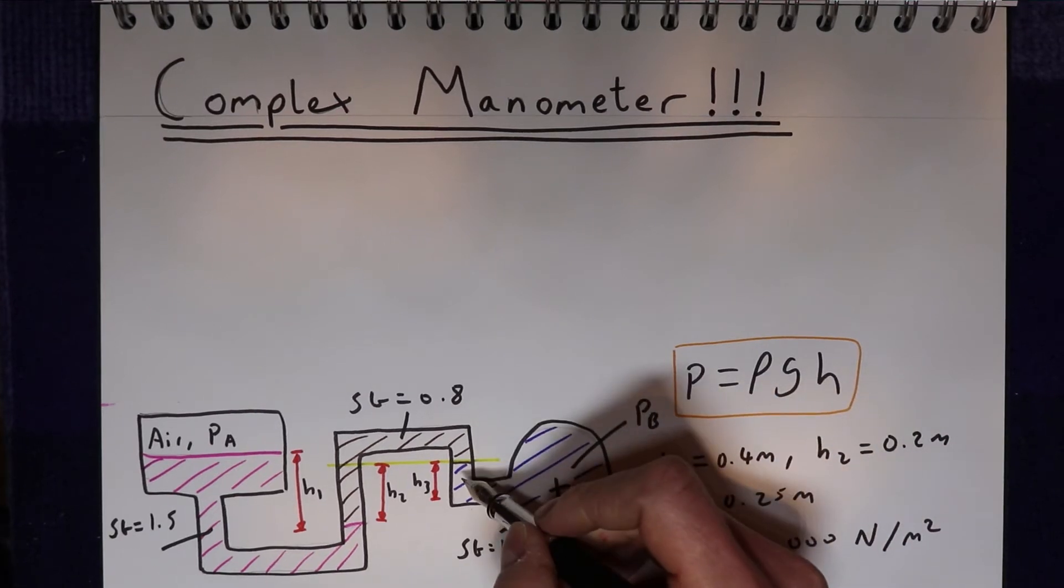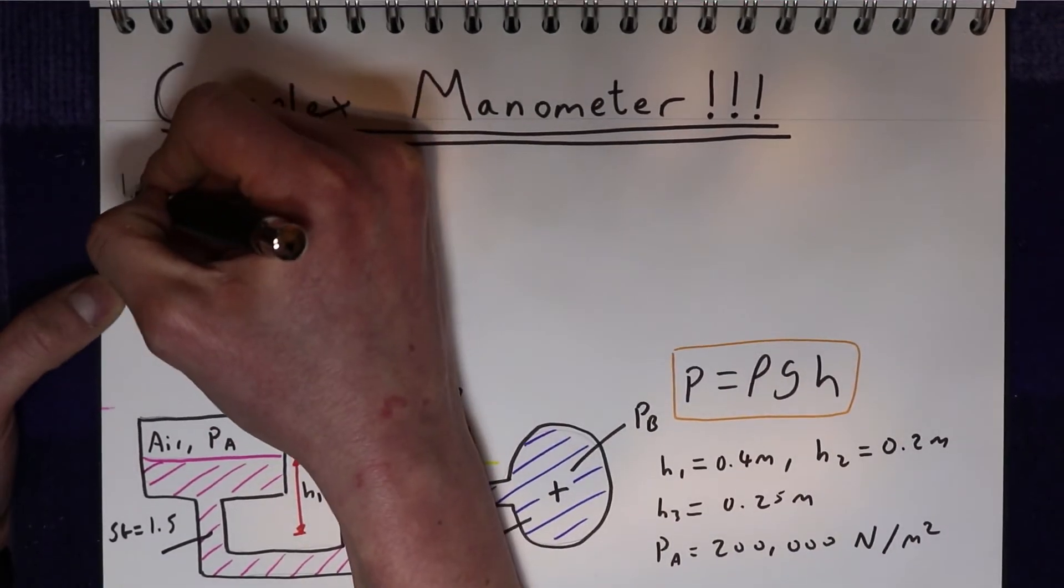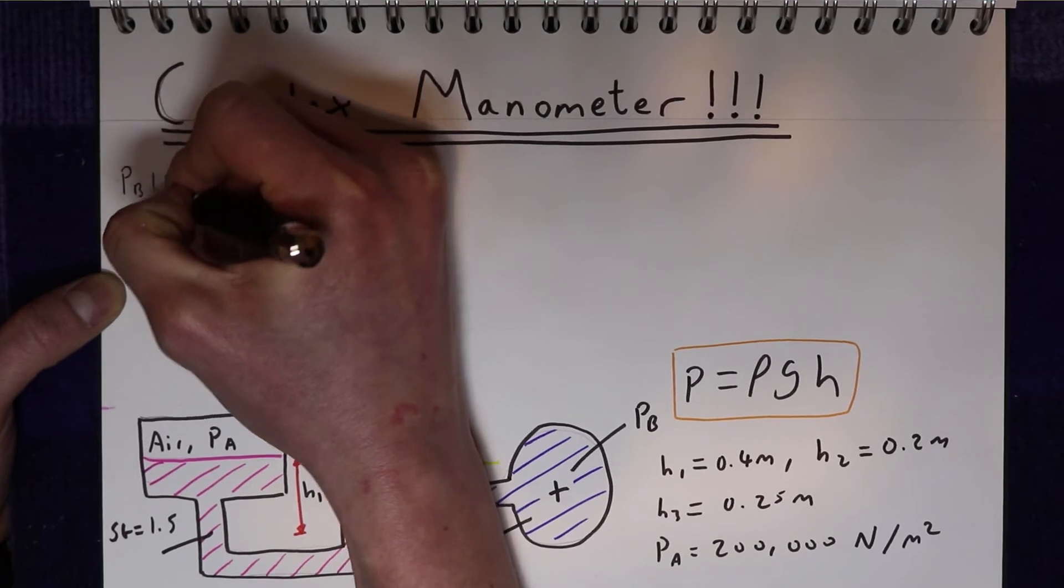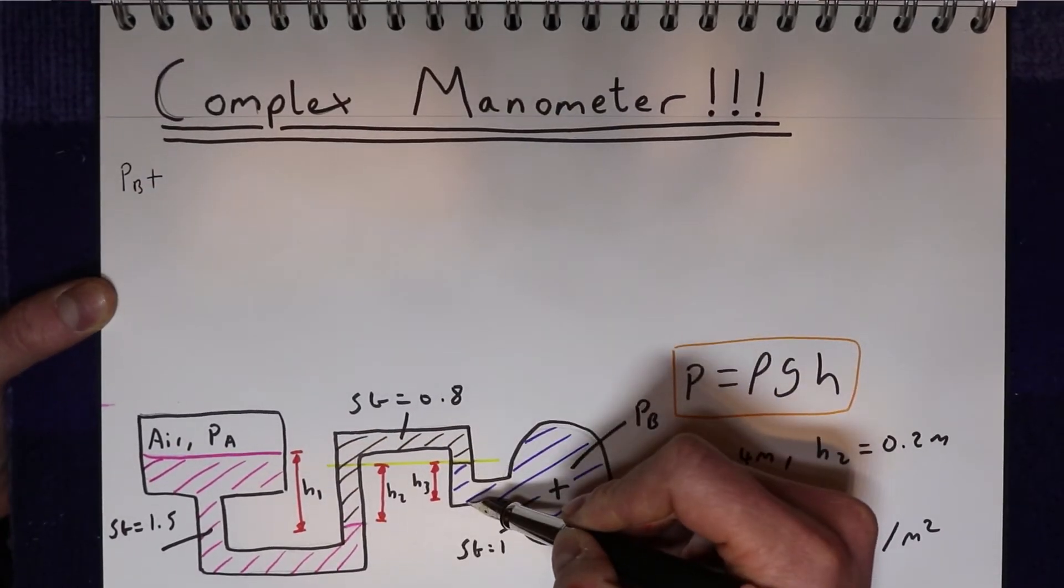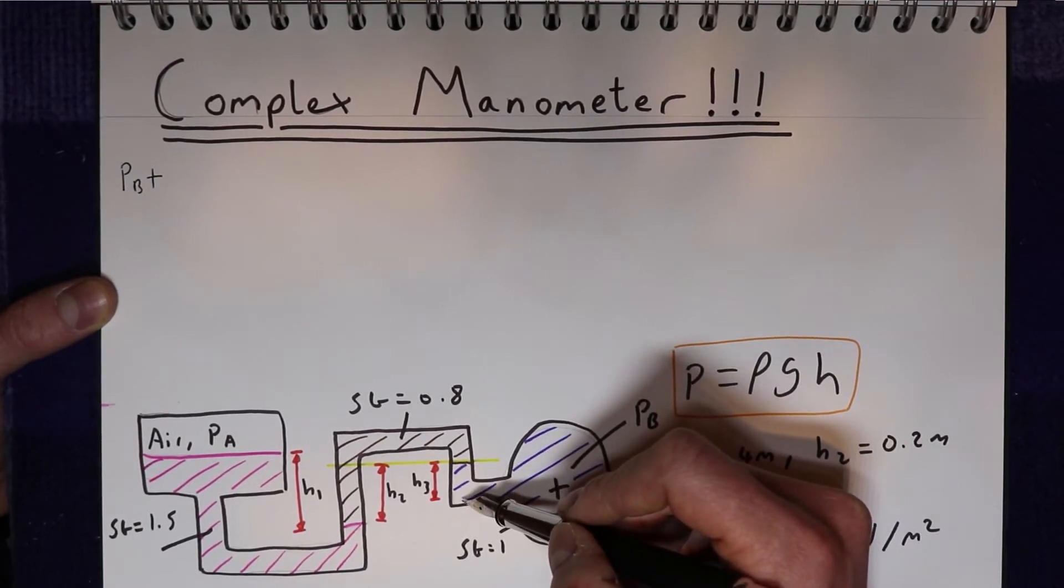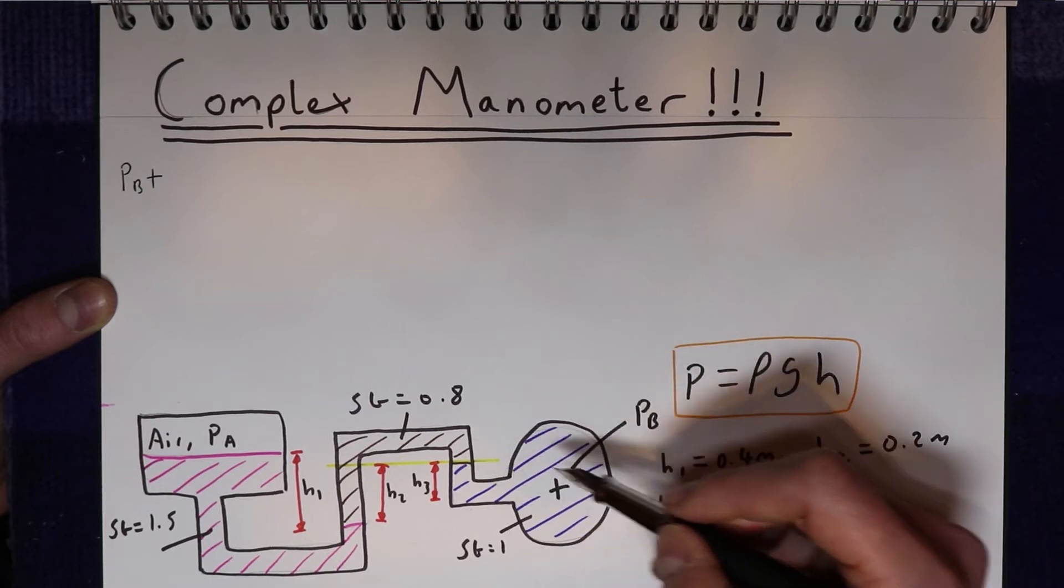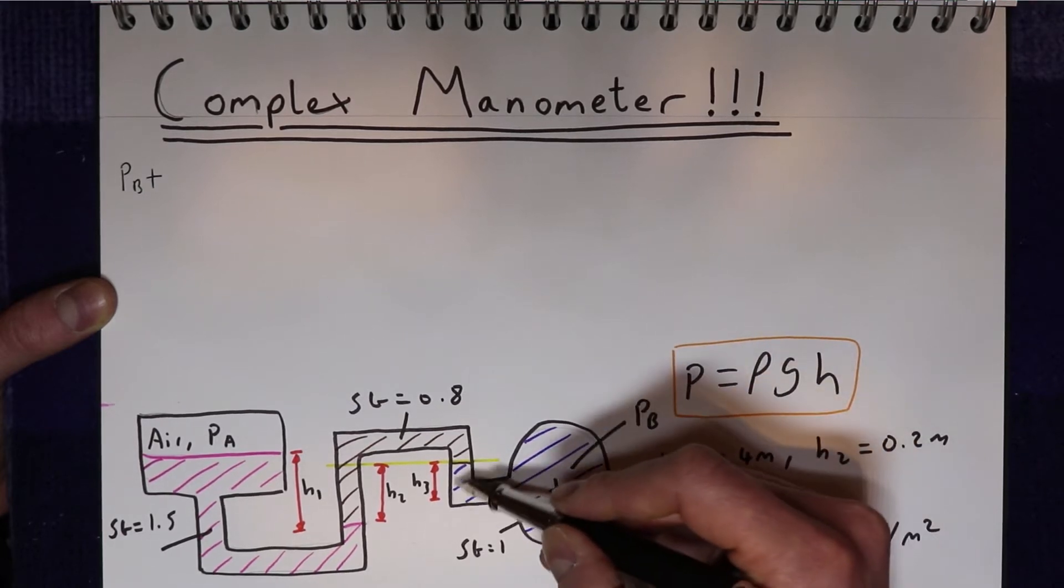So first of all what pressure do we have pushing on this side? Well first of all we have PB in the pipe, so we'll write PB. Then we have this height h3 here, but the important thing to realize when solving this problem is that we're actually going up here, so what that means is we're losing pressure.